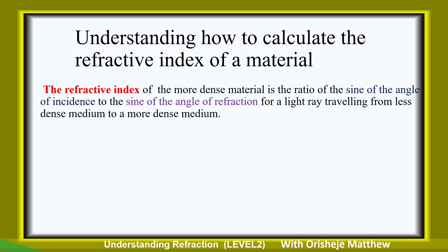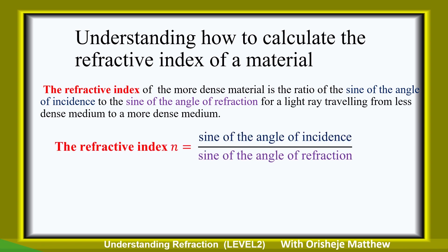First of all, let's look at the definition of refractive index. The refractive index of the more dense material is the ratio of the sine of the angle of incidence to the sine of the angle of refraction, for a light ray traveling from a less dense medium to a more dense medium. So the refractive index n is equal to sine of the angle of incidence in the less dense medium divided by the sine of the angle of refraction in the more dense medium. The simple formula: n equals sine i over sine r.